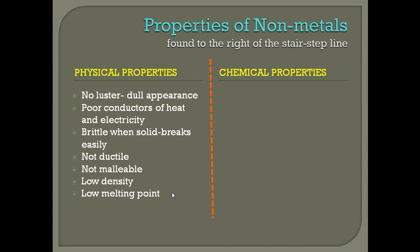Non-metals also have a lower melting point, meaning they will melt at a lower temperature. For chemical properties of non-metals, we're really only going to look at one. We'll focus more on electron behavior when we talk about ions and bonding, but non-metals are going to want to take, gain, or share electrons. So while metals gave electrons away, non-metals are going to take them.